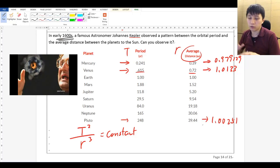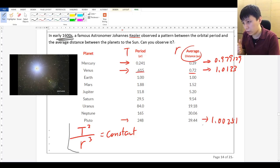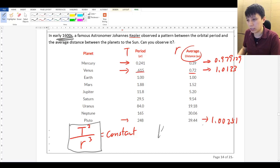So in fact, T squared over r cubed equal to constant, this is actually a law. We call it Kepler's Third Law. Okay, which don't worry, you don't have to learn it officially in IB physics syllabus, but I think it's definitely something you should know. And I think all physics students should know about it.